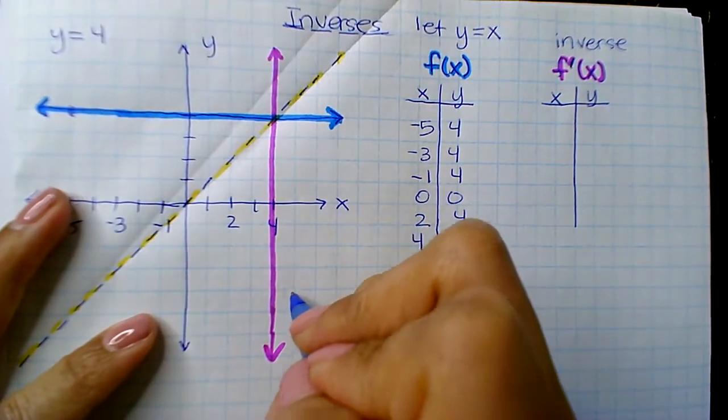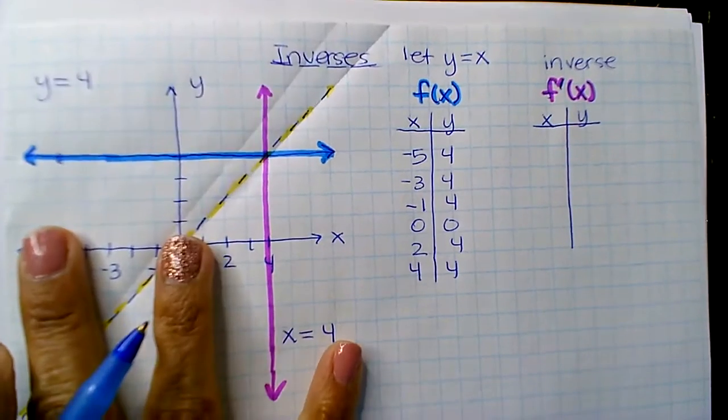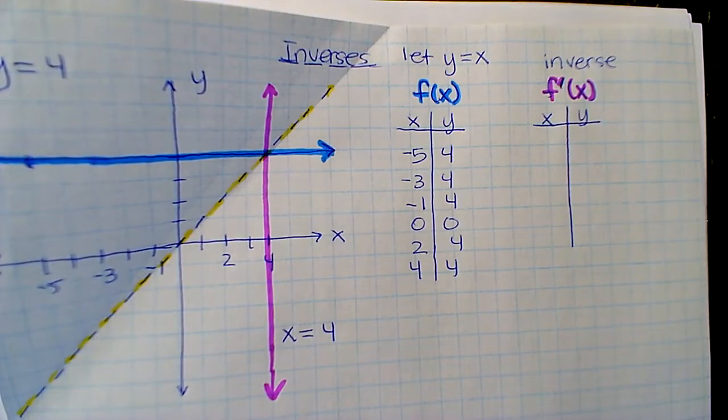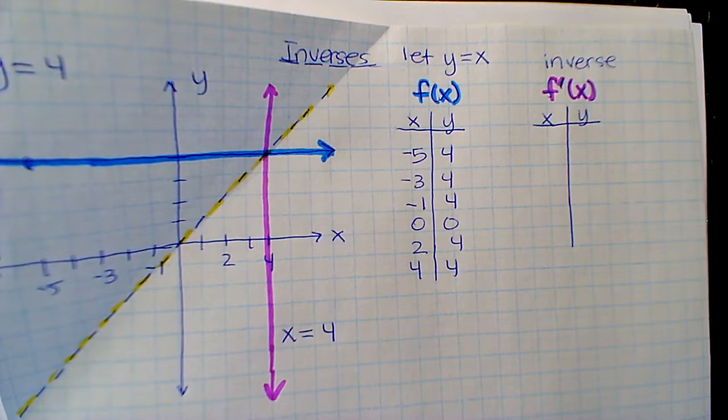And so this line is x equals 4. It's a vertical line. So the inverse function to a horizontal line is a vertical line.